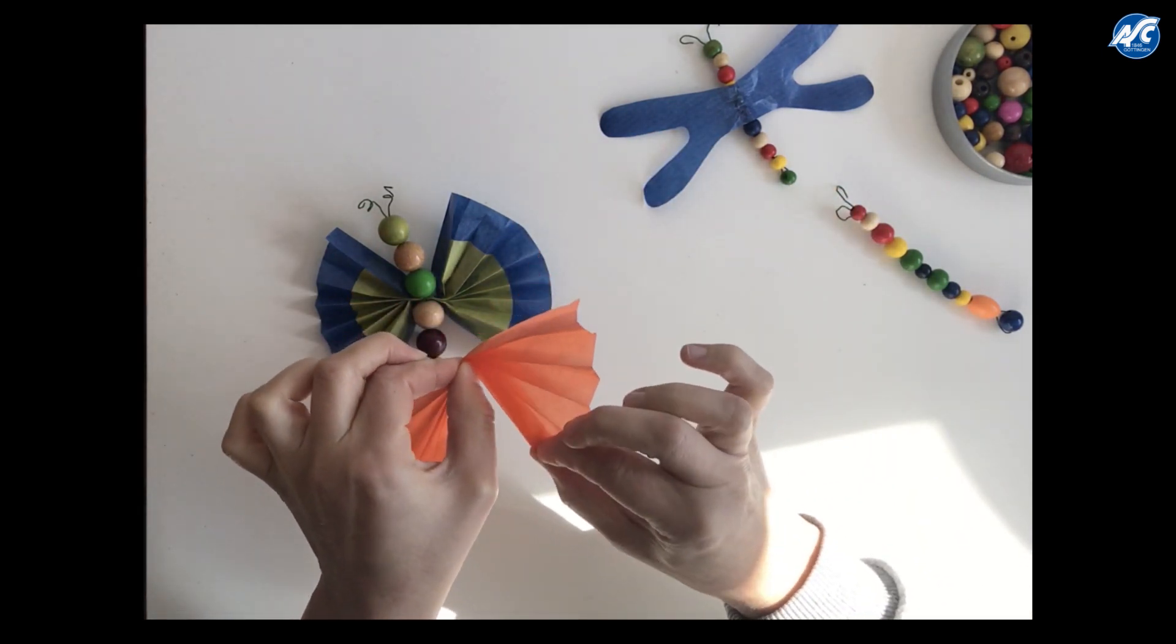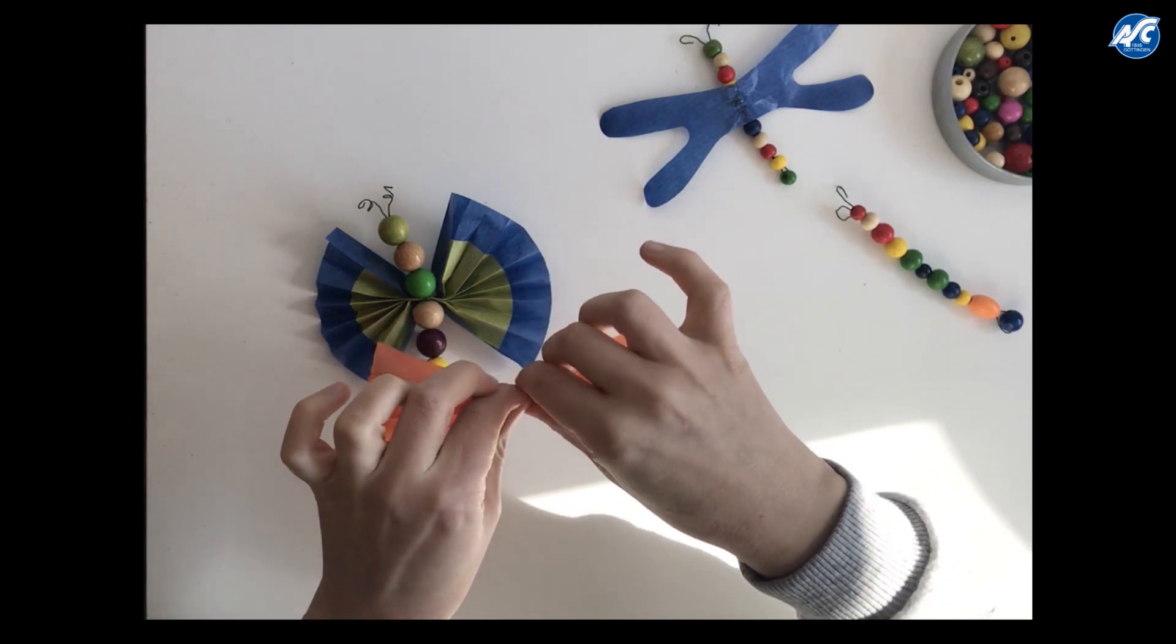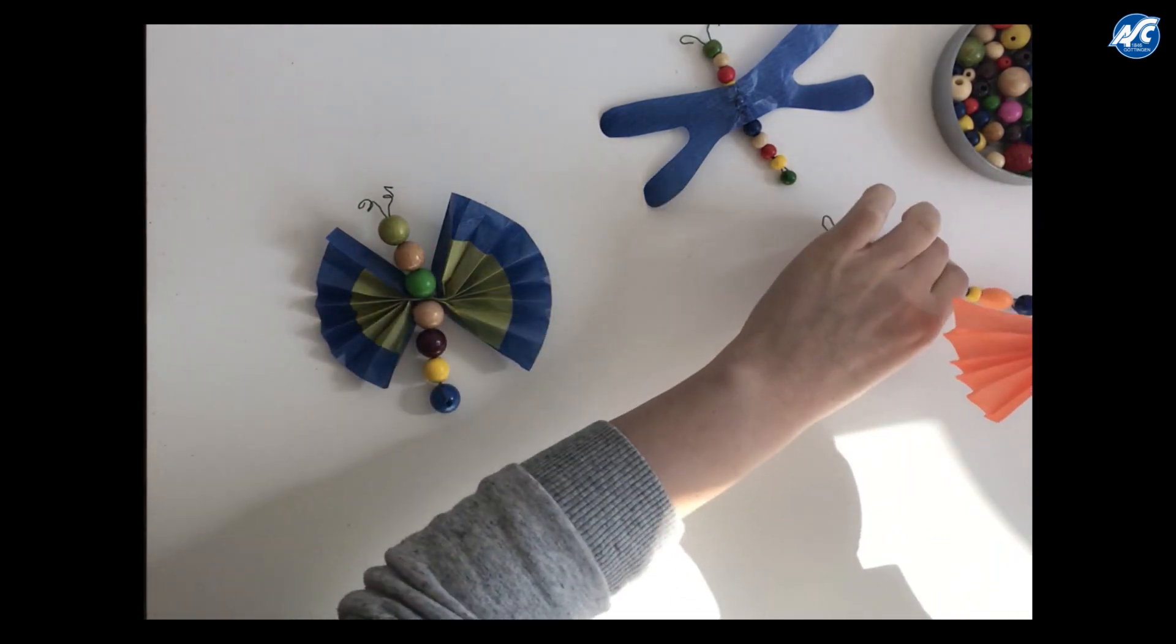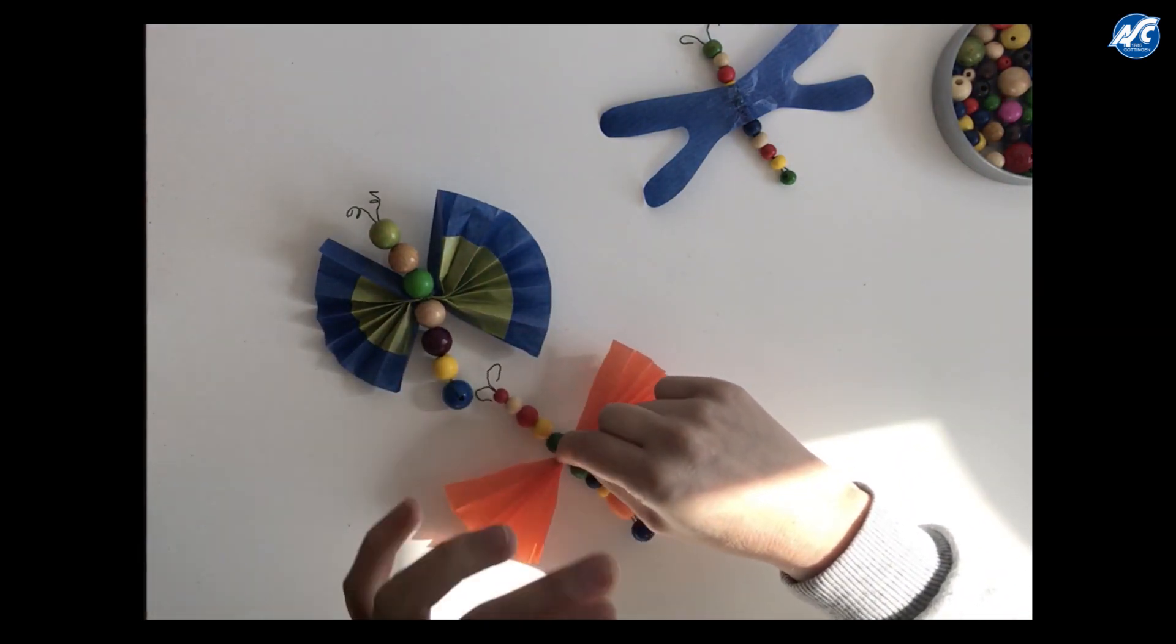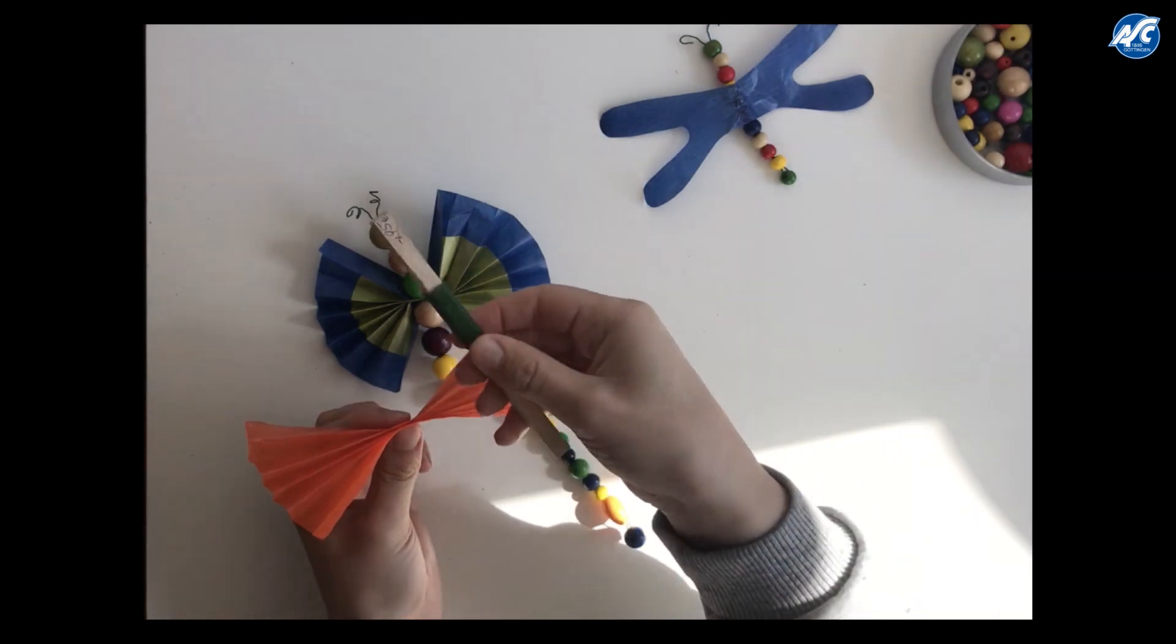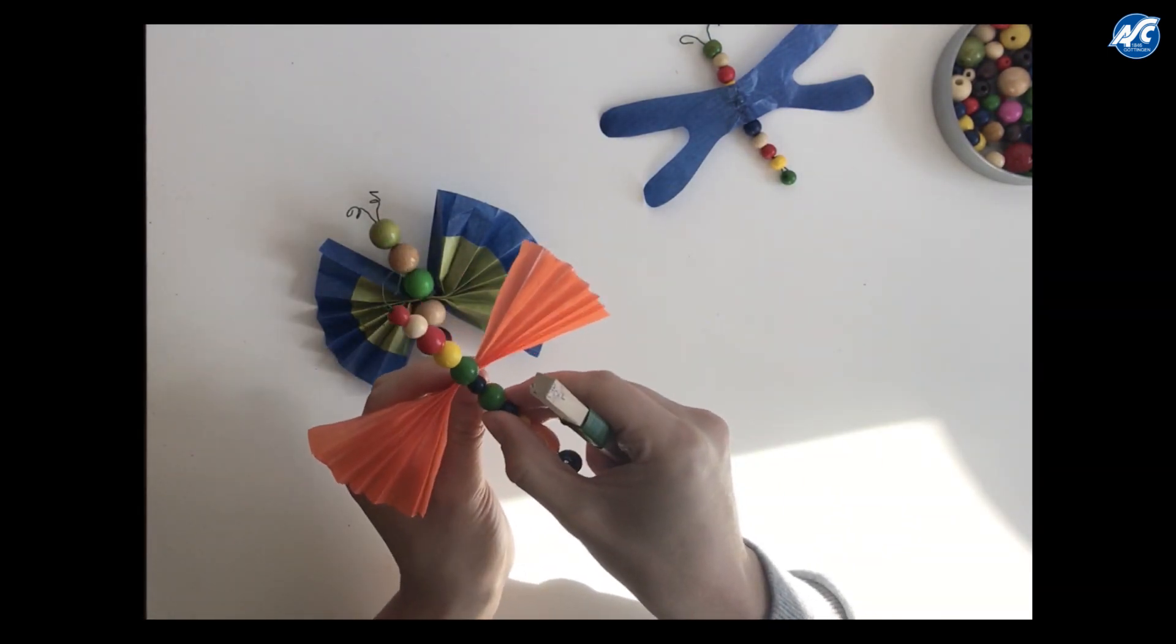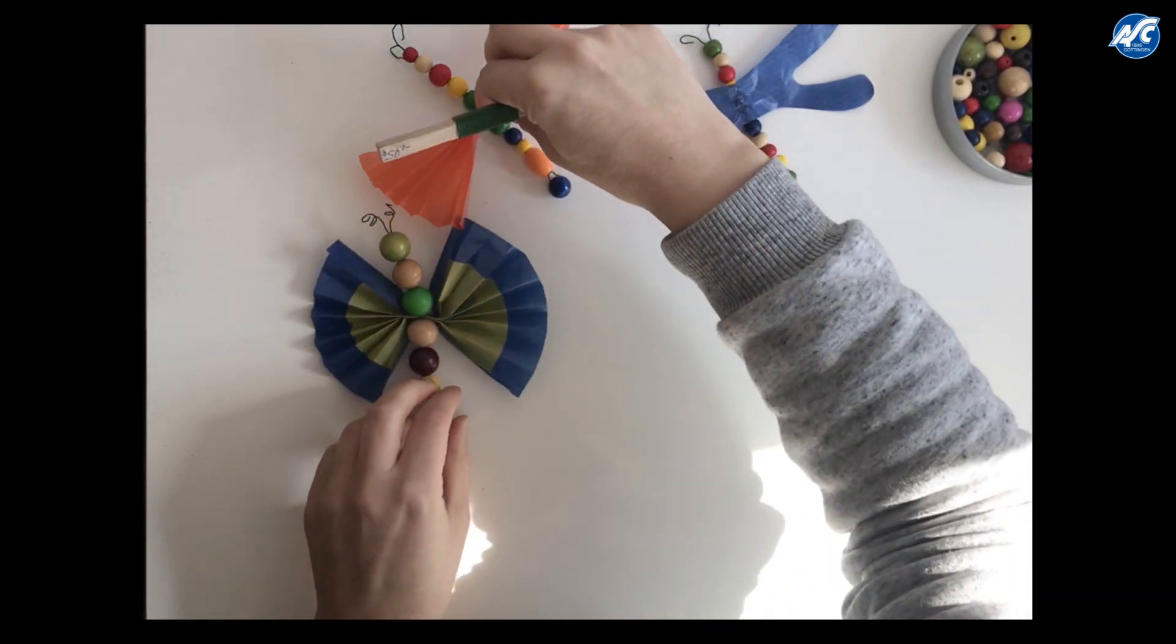You bend it a little bit. And everything you have to do now is to glue it on here. Either you take some glue for that, or you can also take some more of the wire that we had before. And you just add it onto it. So it will look like a very cute butterfly in the end.